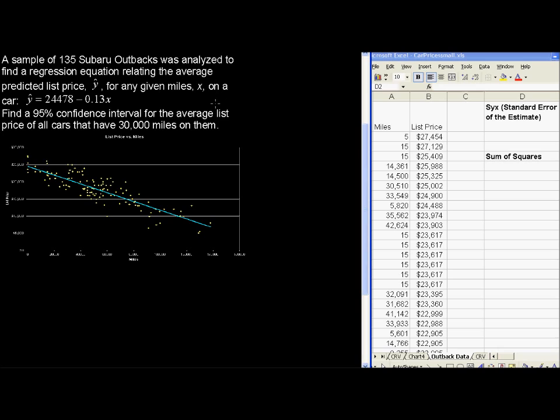A sample of 135 Subaru Outbacks was analyzed to find a regression equation relating the average predicted list price, y hat, for any given miles, x, on a car. Y hat equals 24,478 minus 0.13x. Find a 95% confidence interval for the average list price of all cars that have 30,000 miles on them.